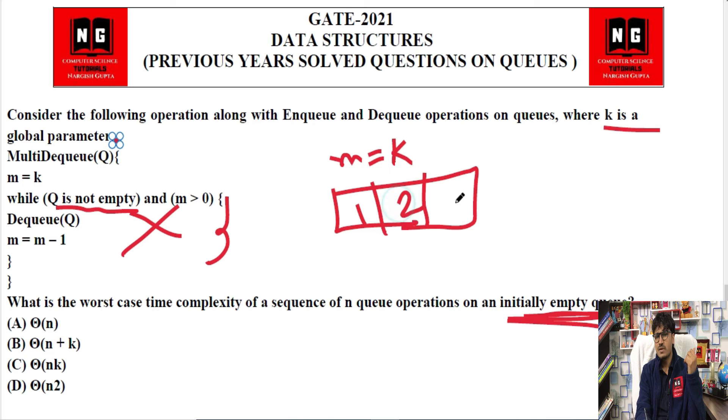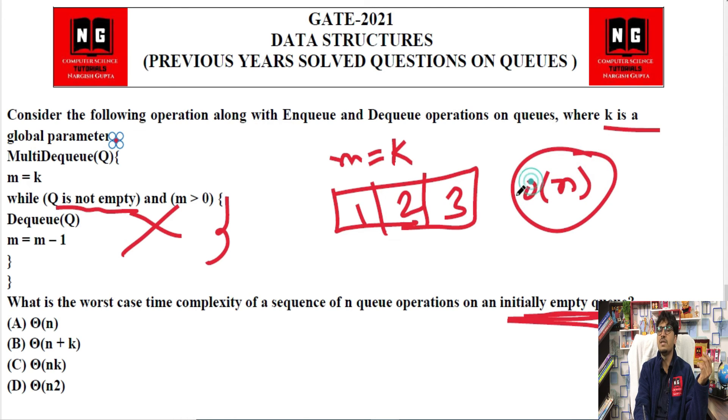So multi dequeue means you do multiple deletions. But it's not possible - as many insertions we do, that many deletions we can do. So in this case, if we did n number of insertions, then we can do n number of deletions. Meaning this function will run for order of n times. And this loop won't run at all because initially the condition will be false. So option one is the correct option for this question.